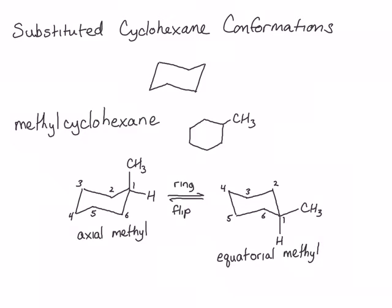I would strongly recommend making a model of this cyclohexane ring and performing the ring flip so that you can convince yourself that the methyl group that starts out axial will become equatorial, and when you reverse the ring flip, it will go from equatorial to axial. Now that we've drawn these two conformers of methyl cyclohexane, we need to determine which is more stable. We can determine this using Newman projection drawings to look at the type of interactions involved in each conformer.